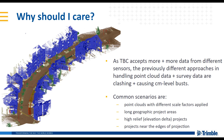As TBC accepts more and more data from different sensors, the previously different approaches in handling point cloud data and survey data prior to version 5.30 are clashing and causing centimeter-level busts — visual busts that you can see — where GNSS data and total station data may not exactly line up with your point clouds. Common scenarios for this are point clouds with different scale factors applied, potentially from different sources or different sensor types.